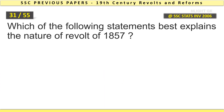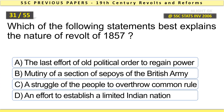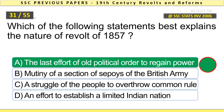Which of the following statements best explains the nature of the revolt of 1857? The last effort of the old political order to regain power.